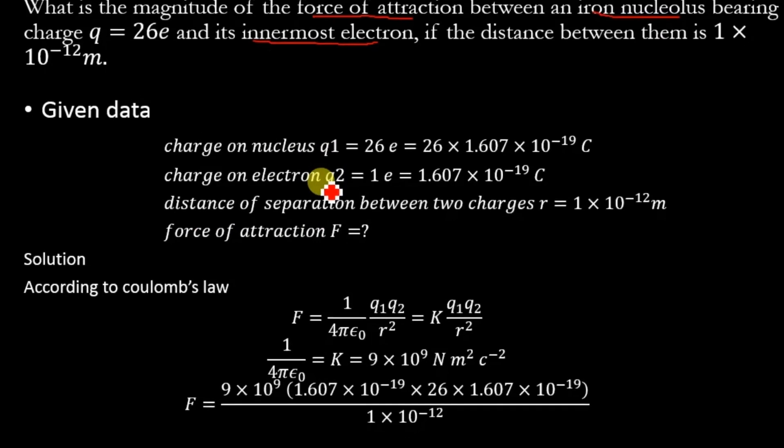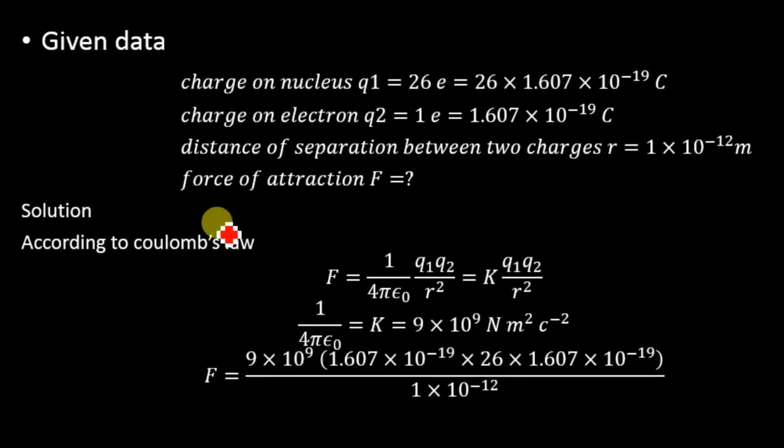According to Coulomb's law, F = (1/4πε₀) × (q1·q2)/r². This term 1/4πε₀ is a constant with value K = 9 × 10^9 N·m²/C².